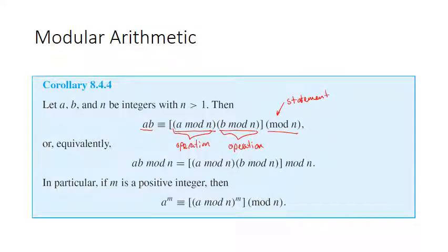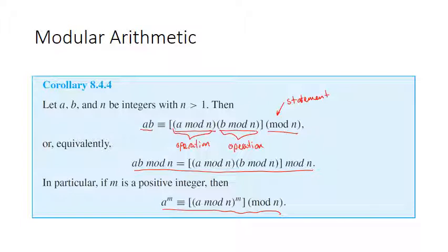So a times b is congruent to (a mod n) times (b mod n) modulo n. Similarly, you can also do the mod n operation to the left side of that congruence. Most importantly and most useful for the encryption method we'll go over later: if you want to raise a to an exponent, you can actually do the mod operation inside the parentheses — you can do mod n to a before raising it to the exponent, and you'll get a result congruent to a^k modulo n.